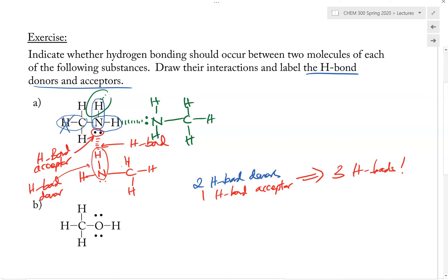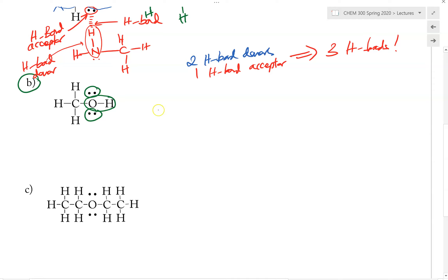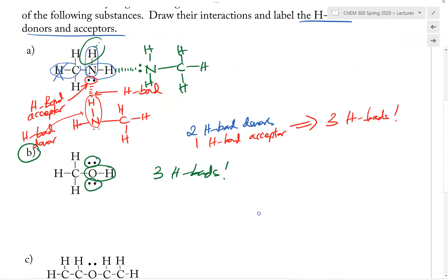Now for example B: will molecule B be able to make H-bond to itself? To answer this, we look for the H-bond donor and H-bond acceptor. The answer is yes — there is one H-bond donor and two acceptors. So overall, this molecule will be able to make three H-bonds to three other molecules.